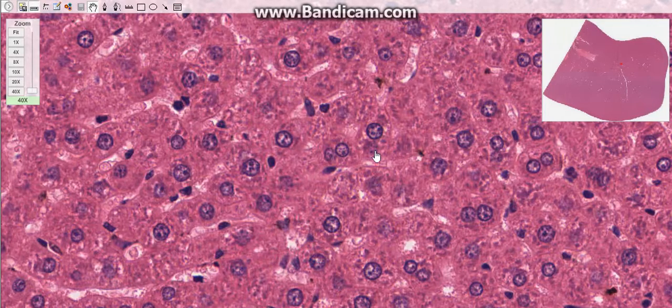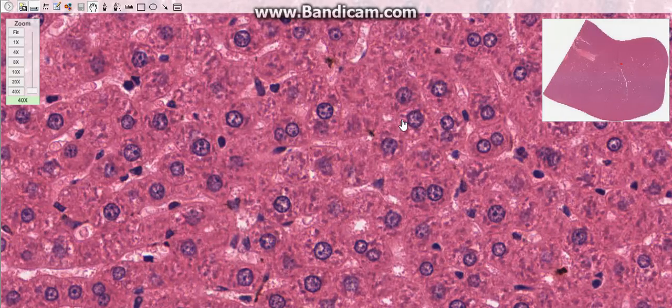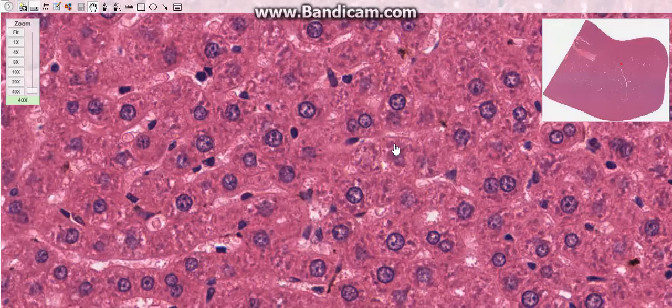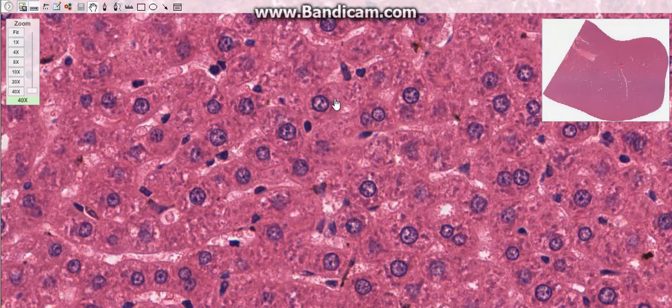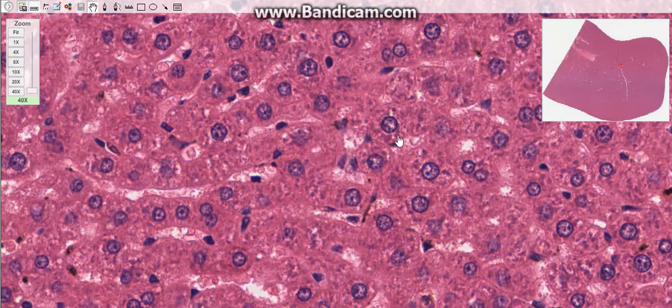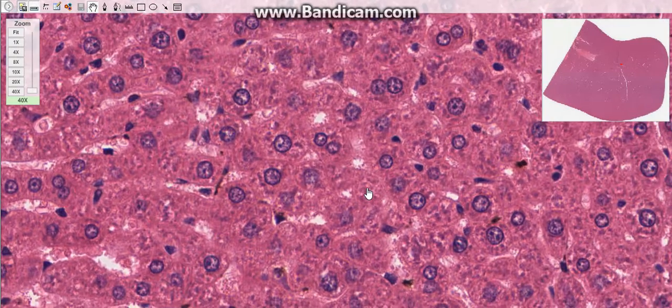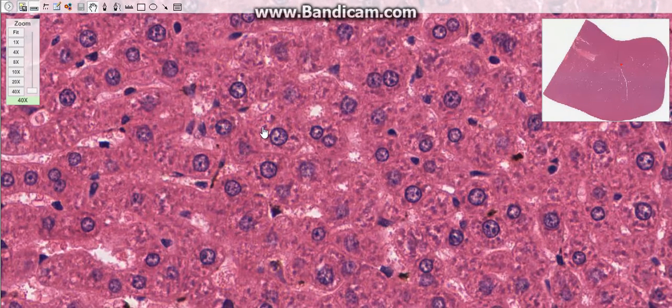The hepatocytes have abundant endoplasmic reticulum, both smooth and rough. The rough endoplasmic reticulum forms aggregates in the cytoplasm. Several proteins are synthesized on polyribosomes in these structures, and the smooth endoplasmic reticulum is responsible for the process of oxidation, methylation, and conjugation required for inactivation or detoxification of various substances.